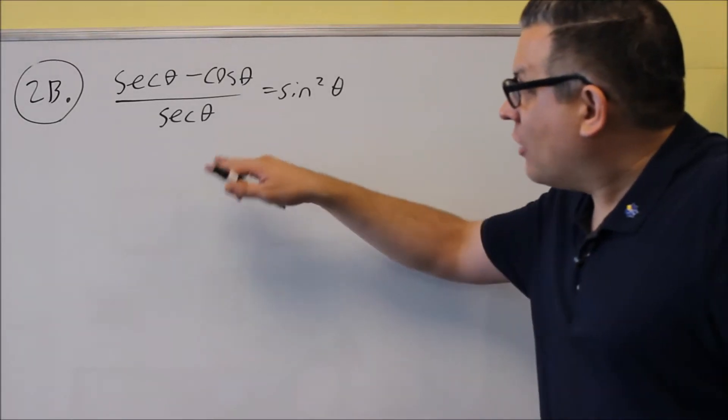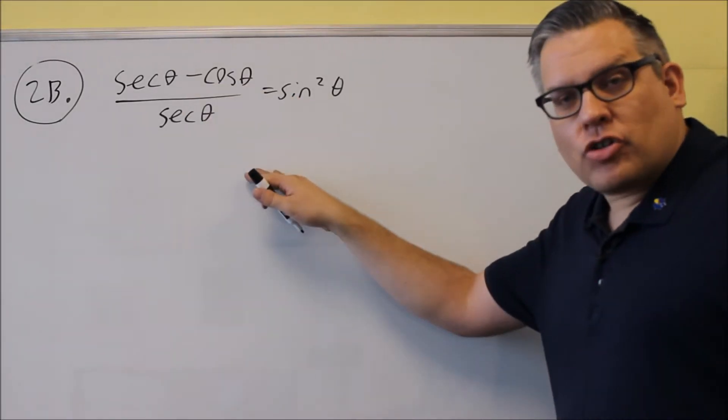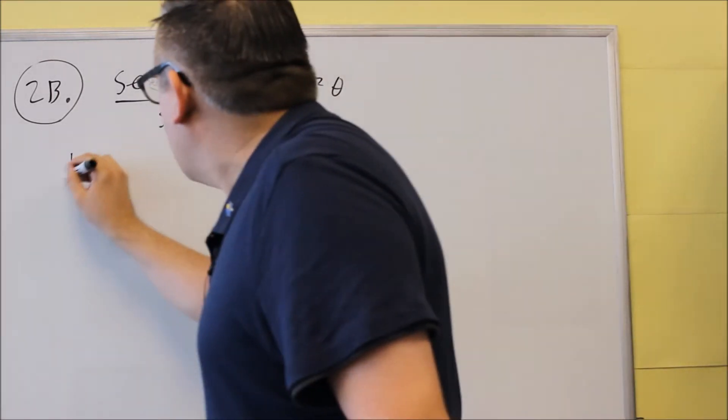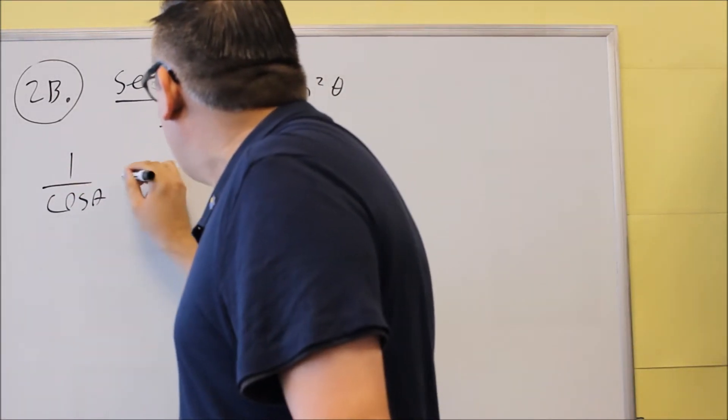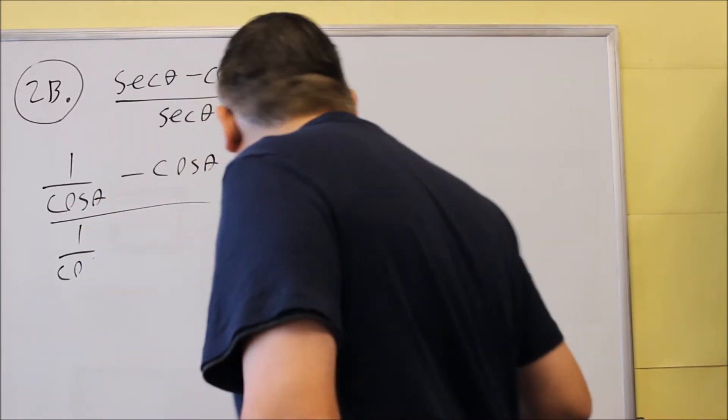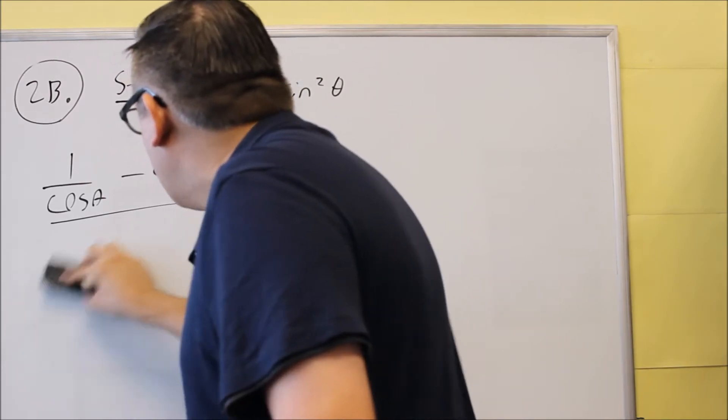Okay, for number 2, again we're going to be looking at our first strategy would be change everything into sines and cosines. So we'll start by doing that and do 1 over cosine theta minus cosine over, just 1 over cosine in the bottom. Let me just center this here.